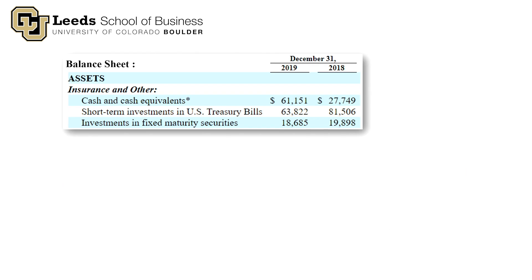Let's take a look at their balance sheet — specifically the asset section. Scanning down three items, you get to investments in fixed maturity securities. This balance sheet is in millions, so that 18.6 is actually $18.6 billion. That's the book value of their investments in fixed maturity securities. Since it's all classified as available for sale, we know that $18.6 billion is the fair value of those securities, because available for sale investments are held at fair value.